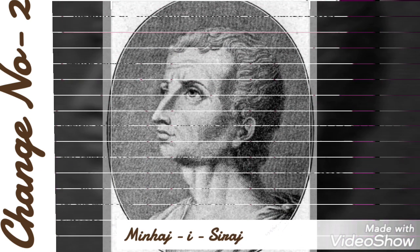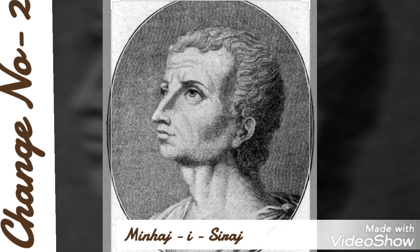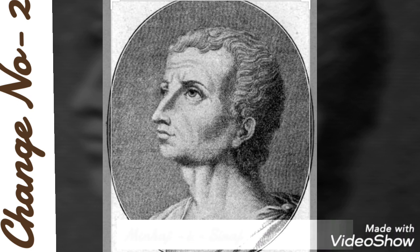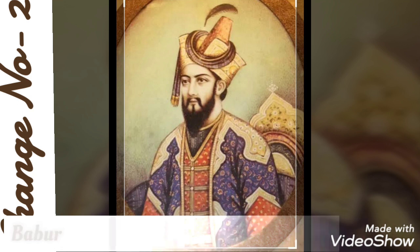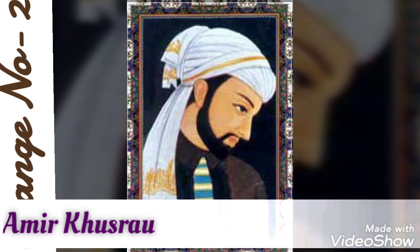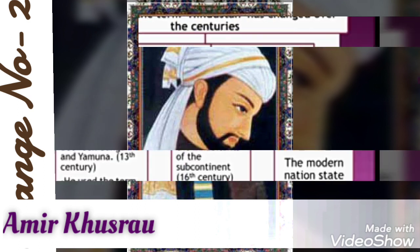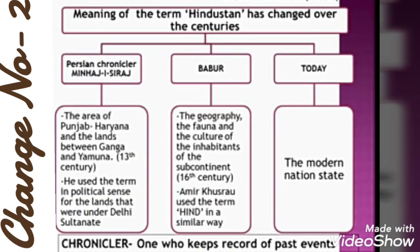This is the image of Minhaj-i-Siraj, the great Persian chronicler. Another differentiation was given by Babur, the founder of the Mughal Empire. And in a similar way, another differentiation was given by Amir Khusrau, who was a poet. Babur described the geography, fauna, and culture of inhabitants of the subcontinent. Amir Khusrau also used the term Hind in a similar way. But now, we use the term Hindustan as the modern nation state.